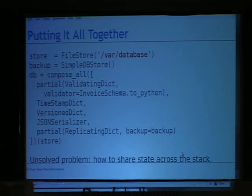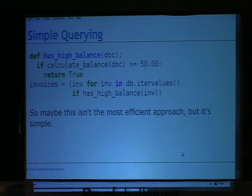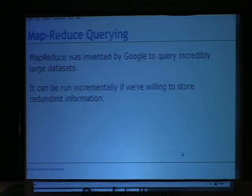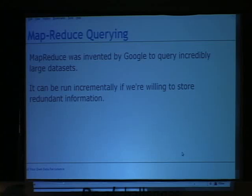An unsolved problem is how to share data across this stack — I haven't figured out how to do it without bastardizing the dictionary interface, but you may want that for transactions. To query this database, you could use a list comprehension or generator expression to scroll through the data — it's not efficient but it's incredibly simple. You could also use MapReduce to query a dataset like this. MapReduce was invented by Google to query data that spans thousands and millions of servers.